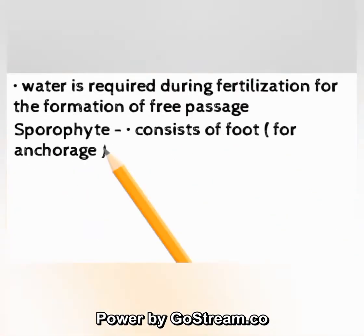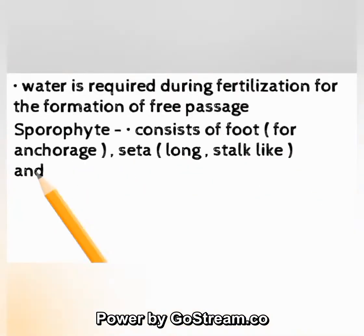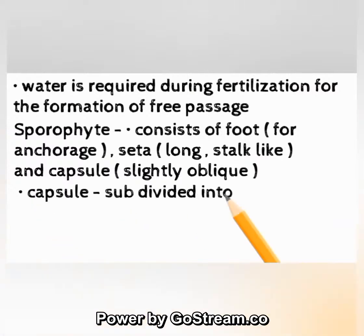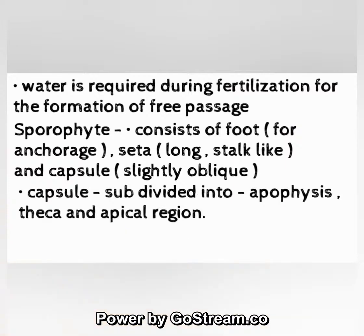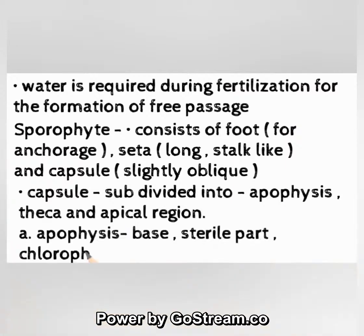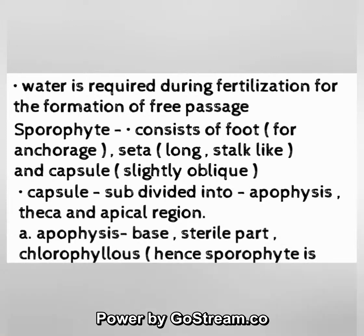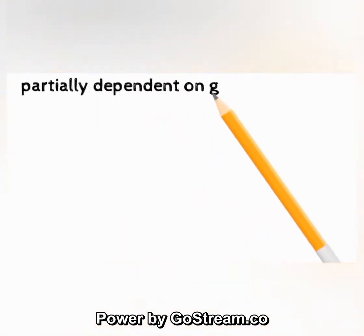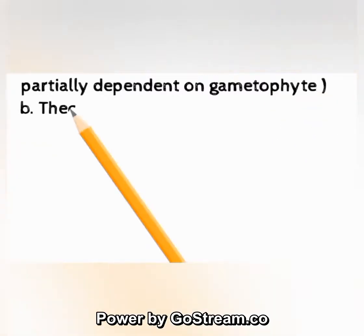Sporophyte consists of: foot (for anchorage), seta (long and stalk-like), and capsule (slightly oblique). The capsule is subdivided into apophysis, theca, and apical region. The apophysis is the basal sterile part and is chlorophyllous — hence the sporophyte is partially dependent on the gametophyte.